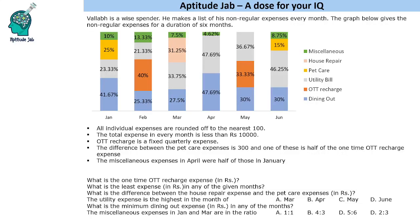Welcome to Aptitude Lab. This is a set based on a stack bar graph. Wallab is a wise spender — he makes a list of his non-regular expenses every month, and the graph gives the non-regular expenses for a duration of six months. Not all values are present everywhere: OTT recharge appears only twice, pet care appears twice, and house repair appears just once. So not every expense is made every month.